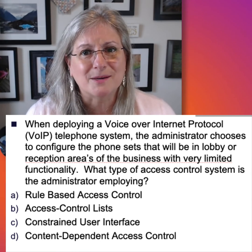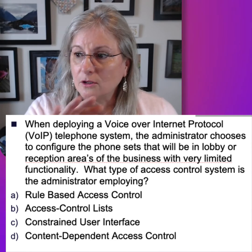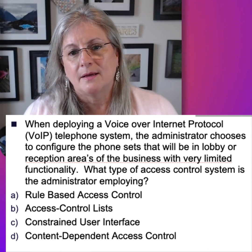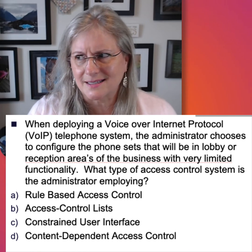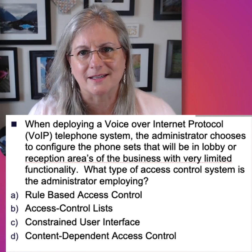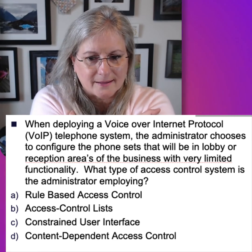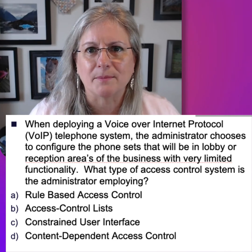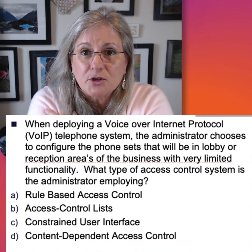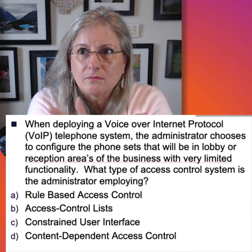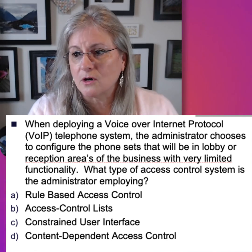Content-dependent access control — the best example is probably spam filters. Spam filters read the content of the email, looking for specific terms that are indications of spam. That's not limiting functionality; that's limiting the emails that get to your inbox, and it's a lot of work. So it doesn't quite match with limited functionality. Constrained — every time I say constrained user interface, what I see in my head is a straitjacket. If a person is in a straitjacket, there's not much they can do. We want to constrain the access.